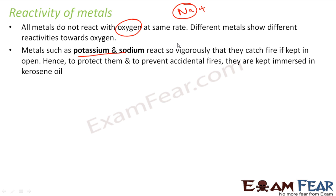To prevent that, sodium is kept in kerosene oil so that it does not get exposed to oxygen or water. These metals are so reactive that the moment they come out of kerosene, they catch fire. For example, they react with water to give NaOH plus H₂. So they are very, very reactive metals.